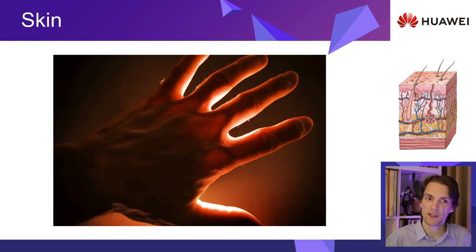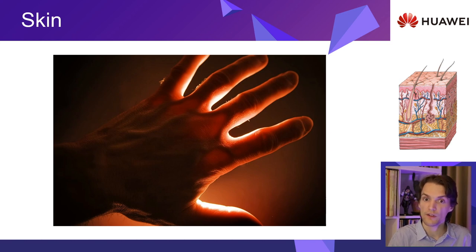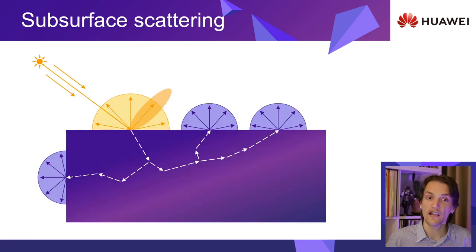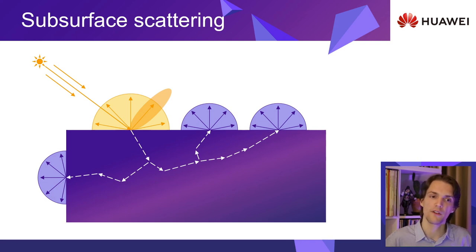Skin is composed of many layers with varying thickness and density. Light, as it hits the surface, gets inside and propagates through the medium, exiting all over the surface. That effect is what we call subsurface scattering — the scattering of light below a surface.